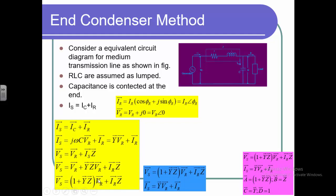Now equating these two equations with the ABCD parameter format, the ABCD parameters for the end condenser method are: A = 1 + YZ, B = Z, C = Y, and D = 1. By simply remembering these four parameters, we can write the equations for VS and IS for the end condenser method.